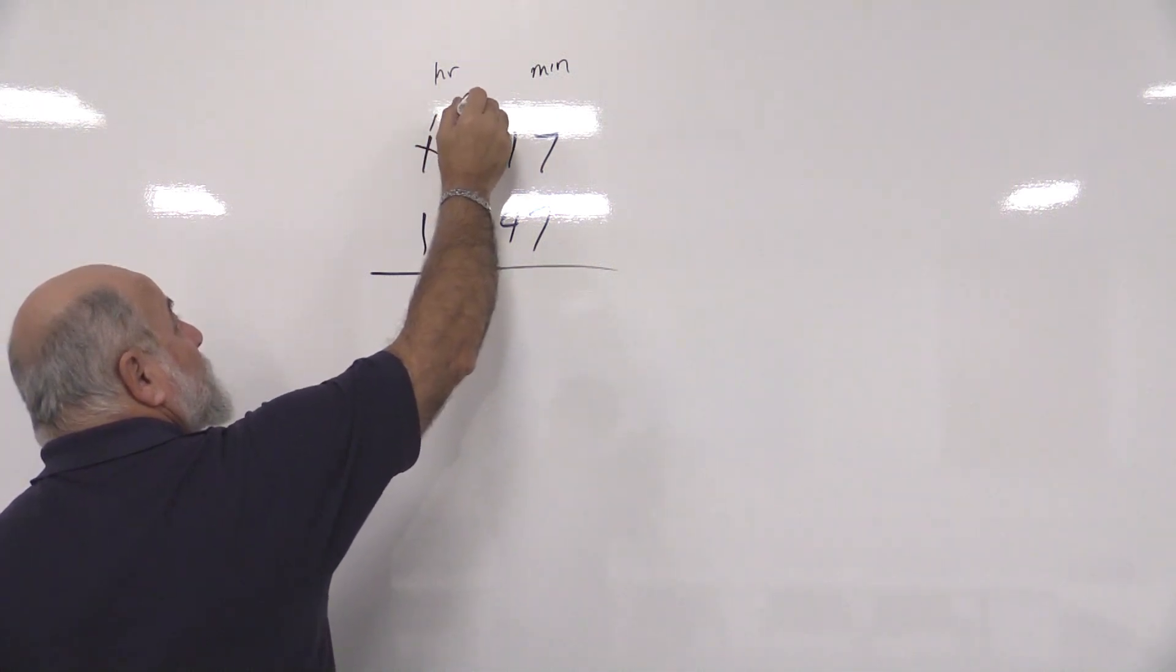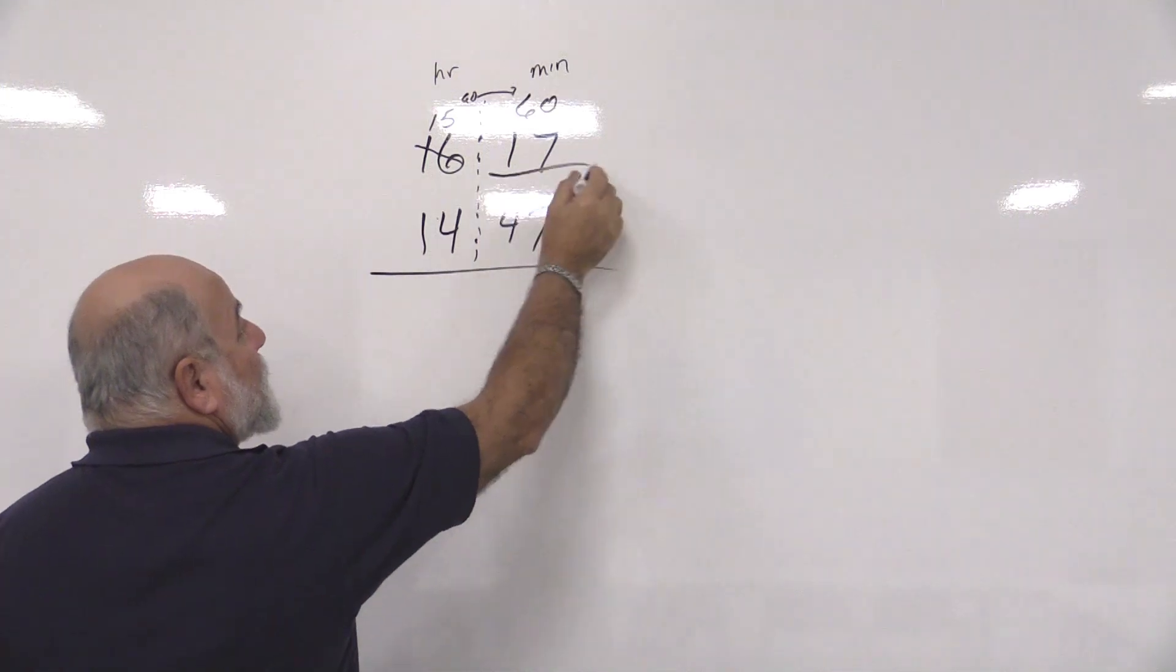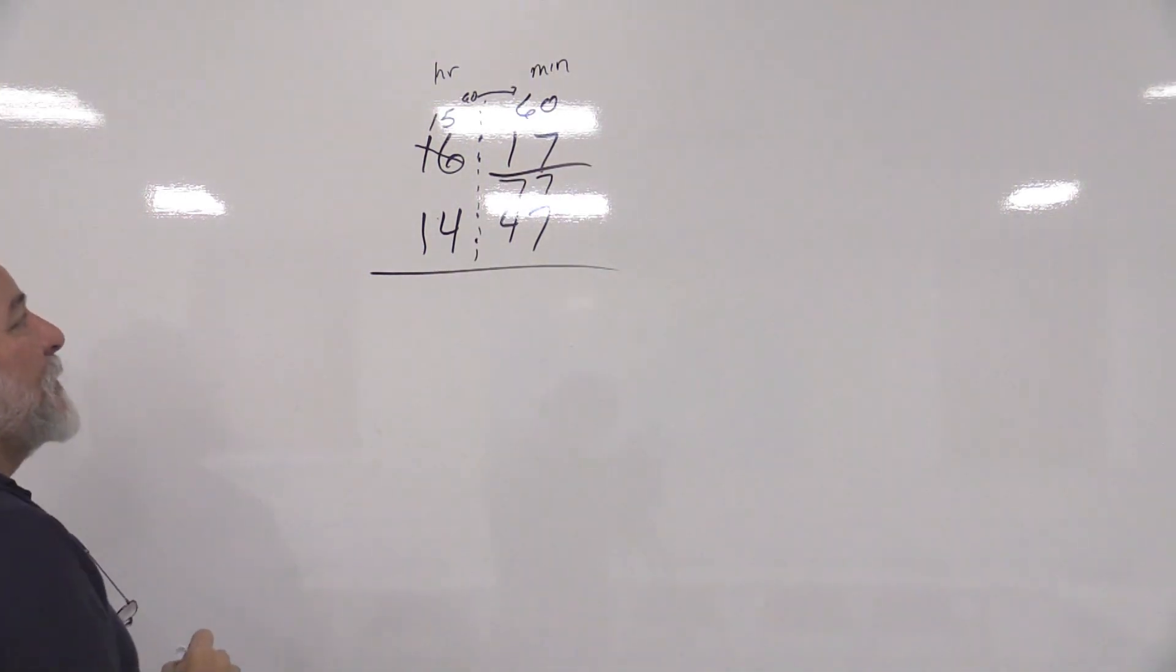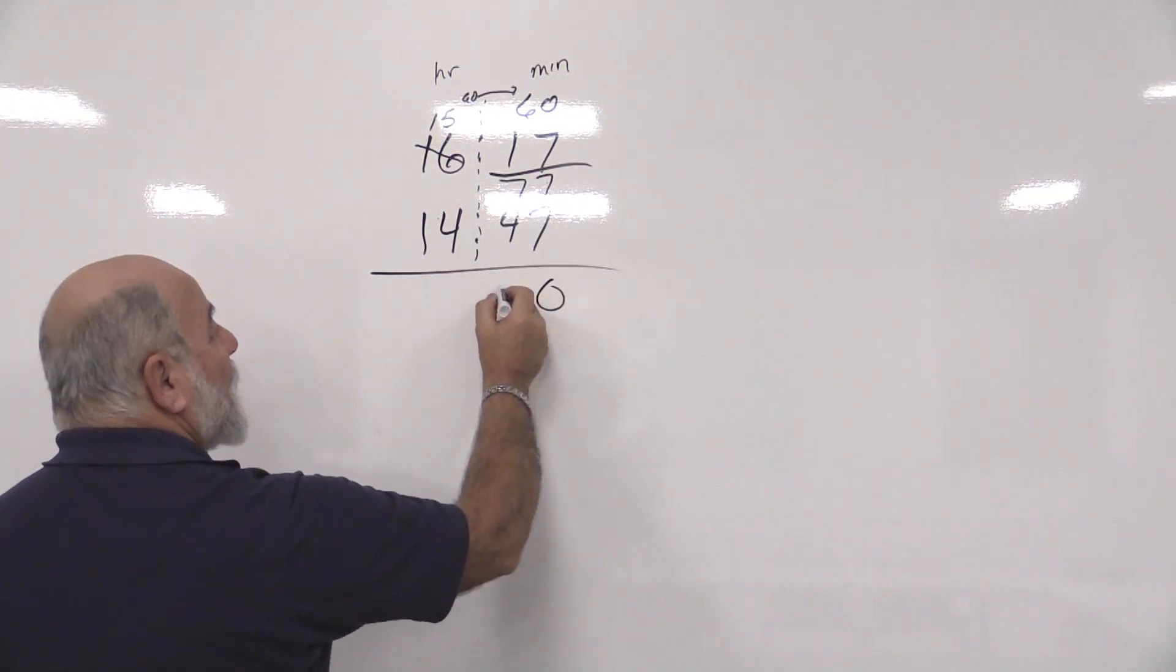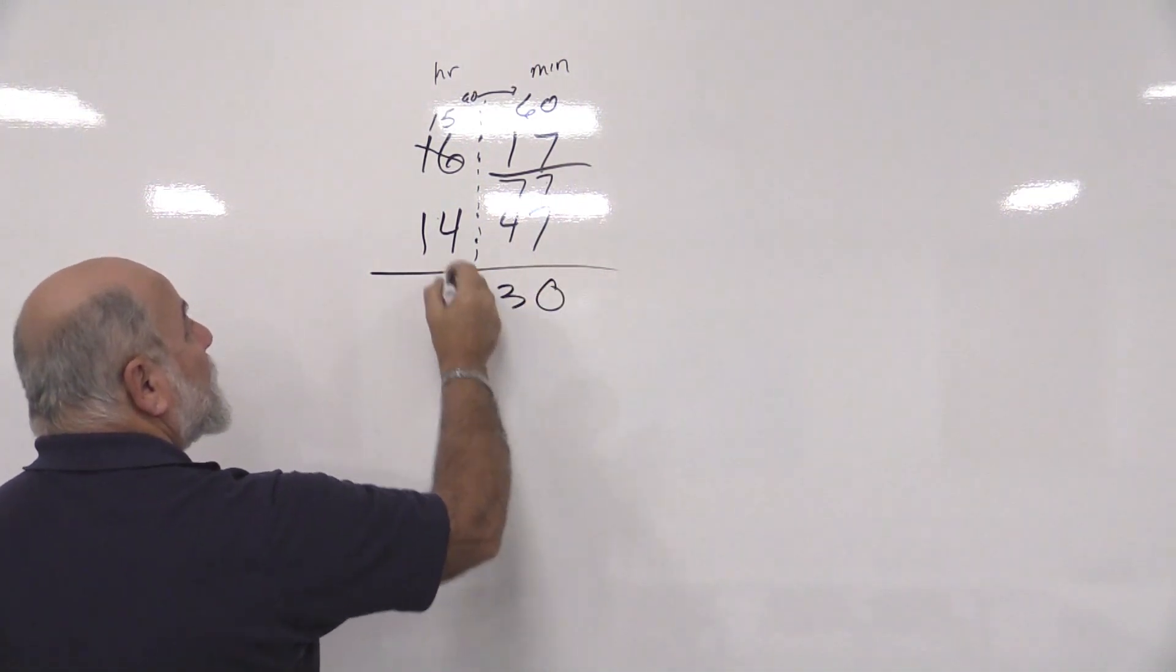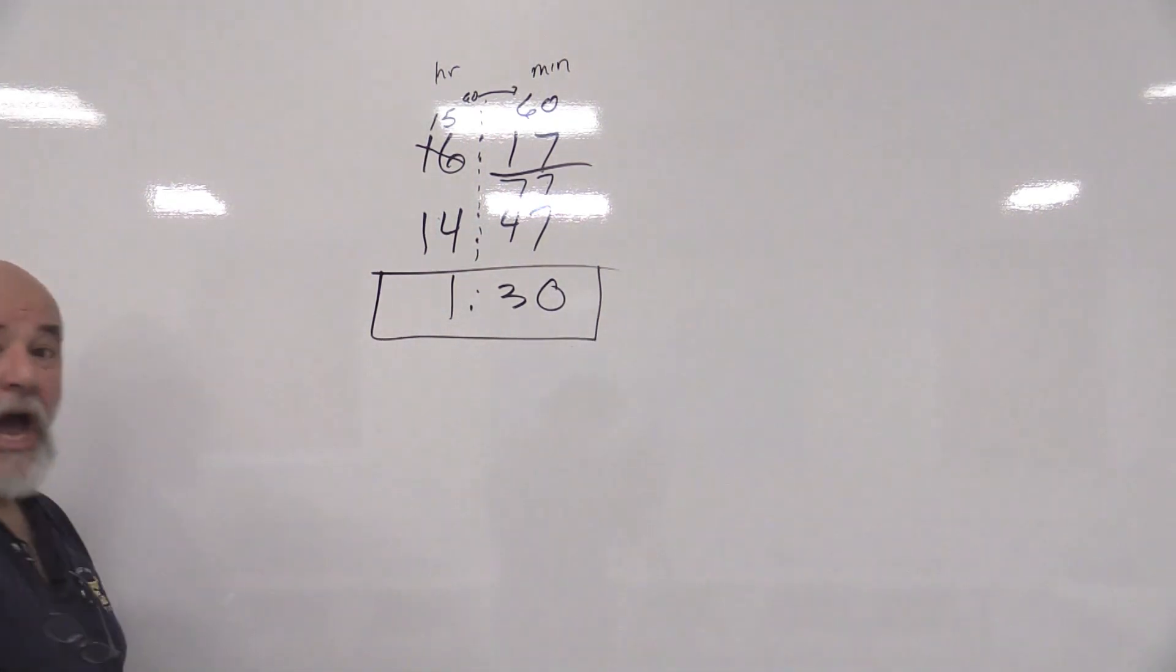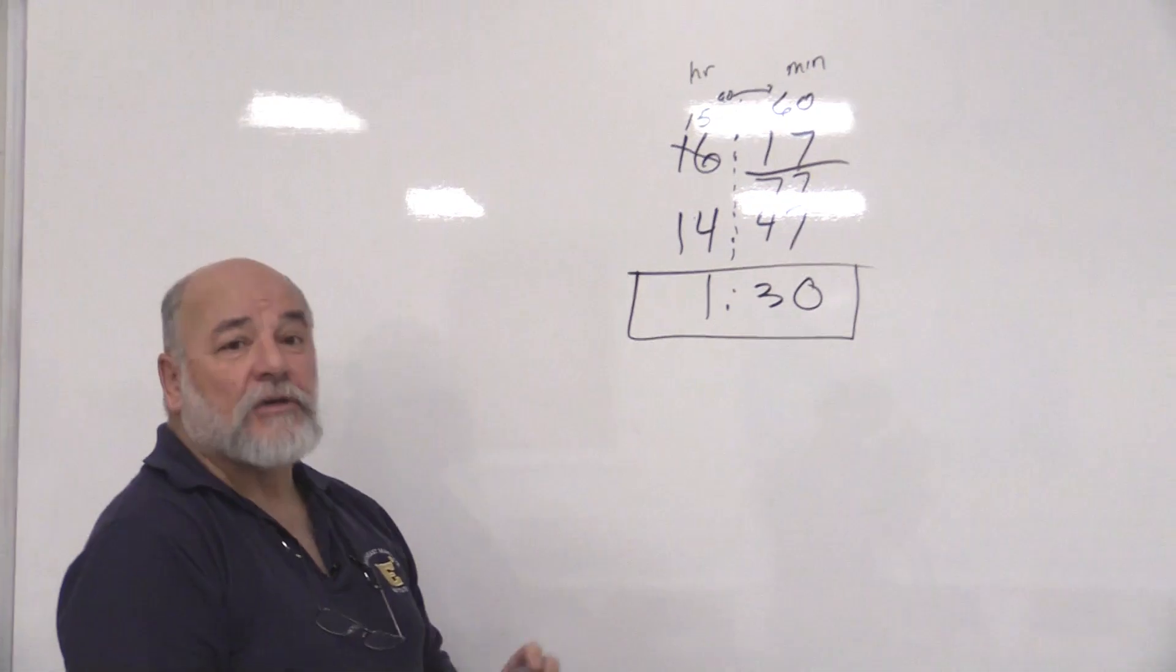60 minutes, add it to the minutes we have. That's going to turn that into 77 minutes. Now we can do the math. 7 minus 7 is 0, 7 minus 4 is 3, 15 minus 4 is 1. We've been underway for 1 hour and 30 minutes.